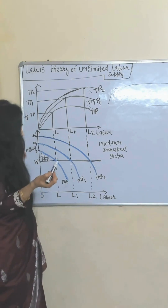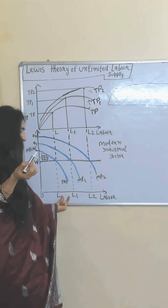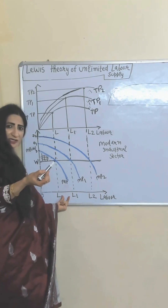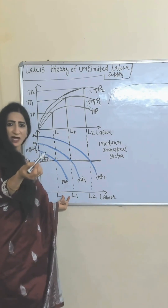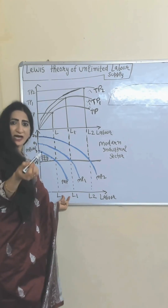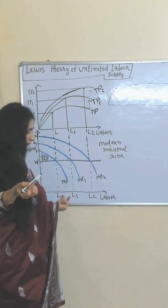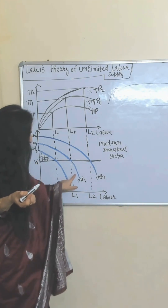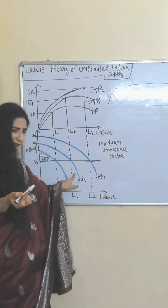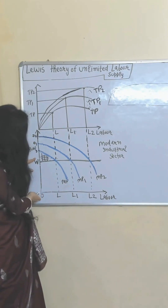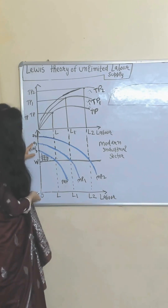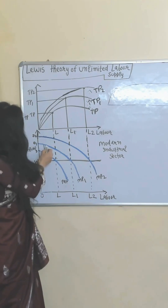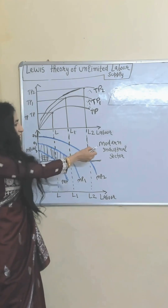As output increases, they need more labor, so more labor L to L1 is transferred from the agriculture to the modern industrial sector. Their marginal product increases because they are utilizing labor in the proper way. That's why the marginal product curve shifts forward. They are paying wages equal to OW, but the marginal product of labor is now equal to OD1.